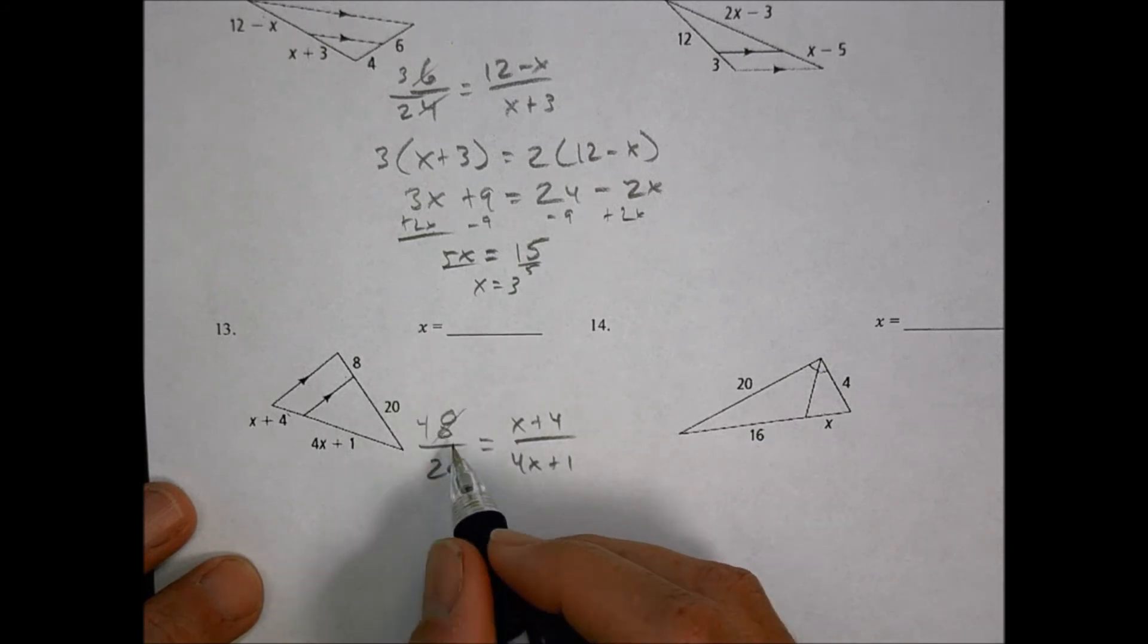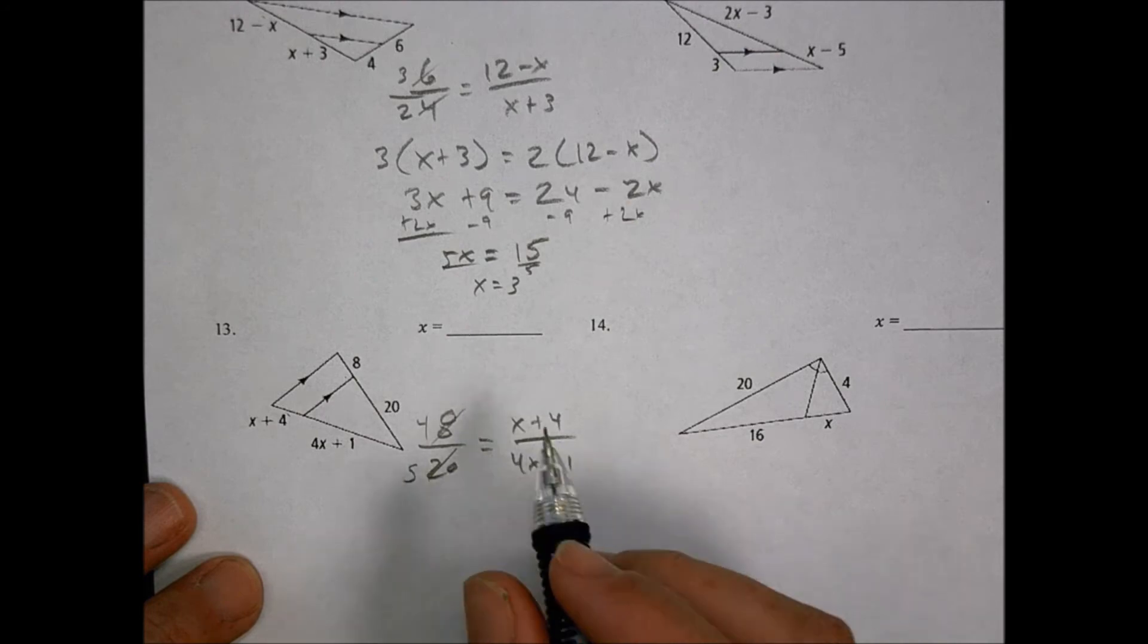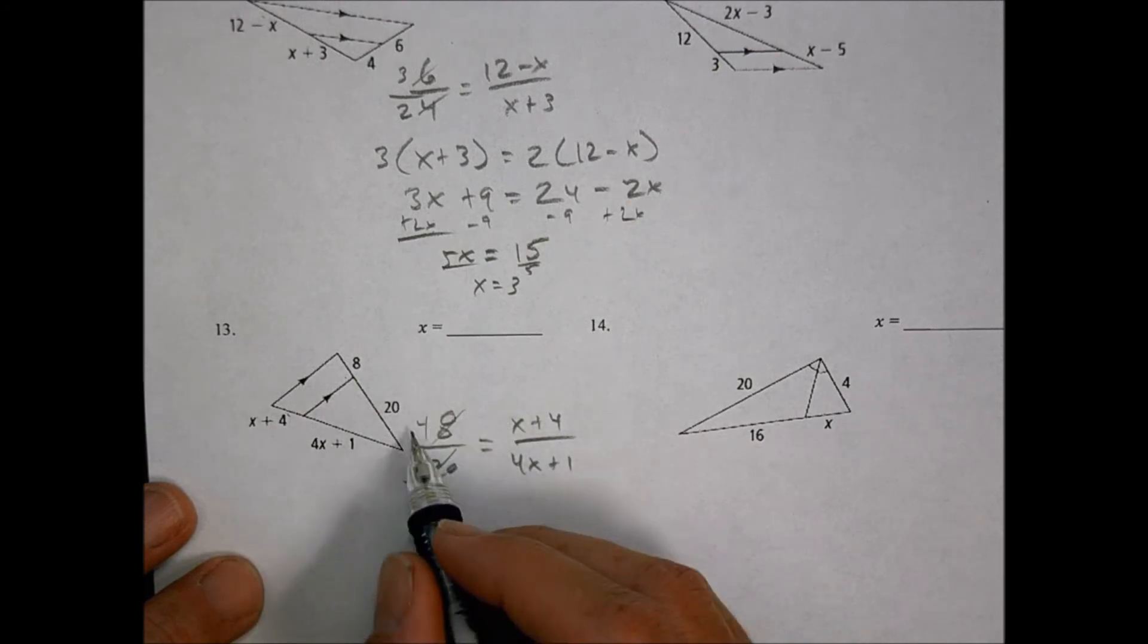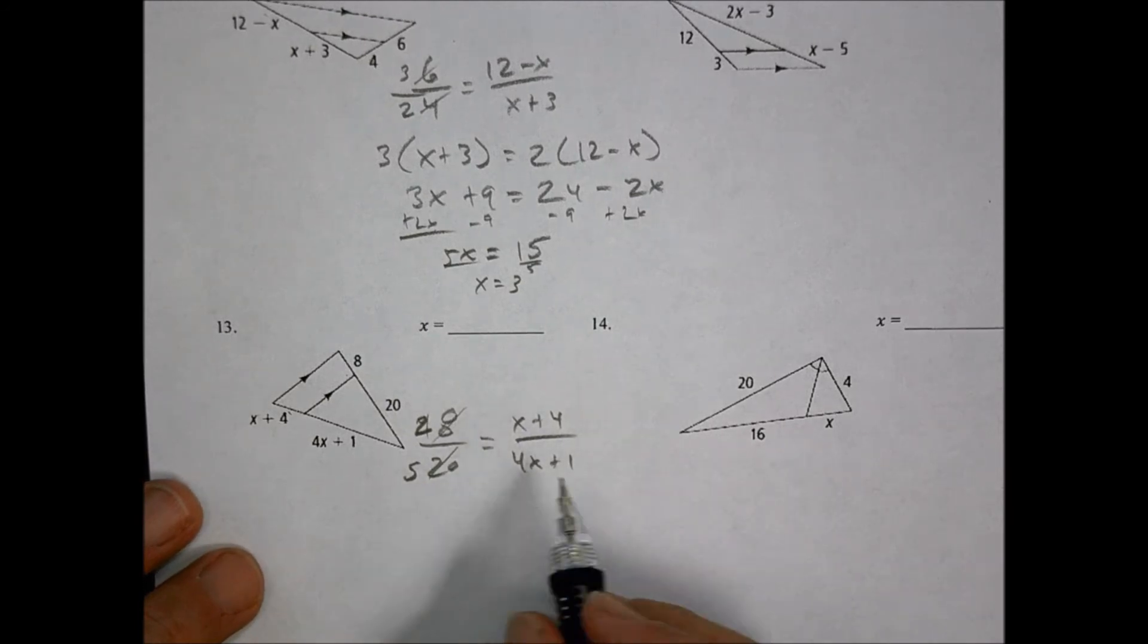Can we reduce this? Sure can. 4 goes in here 2 times, and 4 goes in there 5 times. Let's do 2 fifths.